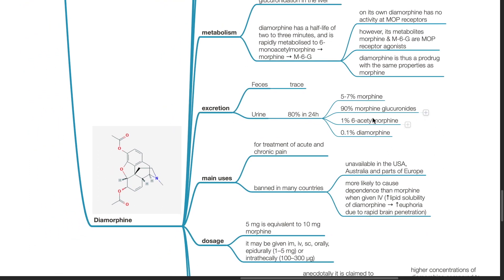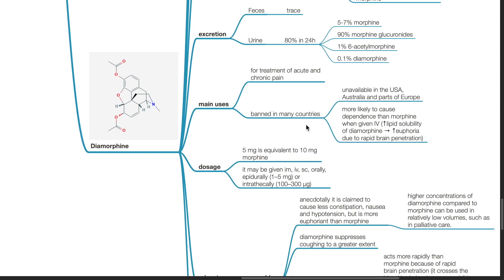Excretion. Trace amounts of metabolites are found in the feces. 80% of metabolites are found in the urine at 24 hours. Main uses of diamorphine: it is used to treat acute and chronic pain. However, it has been banned in many countries. It is more likely to cause dependence than morphine when given intravenously. Due to the increased lipid solubility of diamorphine, increased euphoria is experienced due to rapid brain penetration.